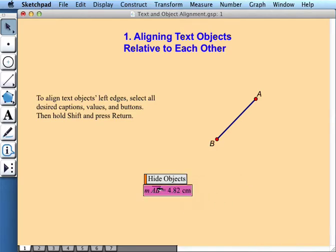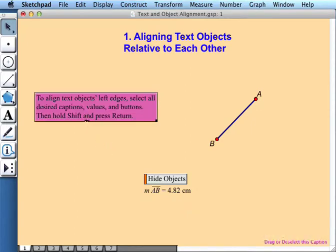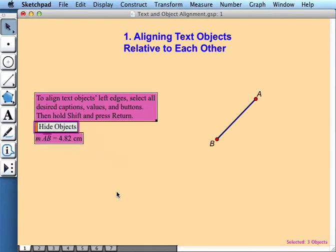similarly for up and down. But for up and down we actually have a second solution that in many instances is a better one. So if I want to align this paragraph with this button and this measurement vertically, I can select all three, hold the shift key and press return, and